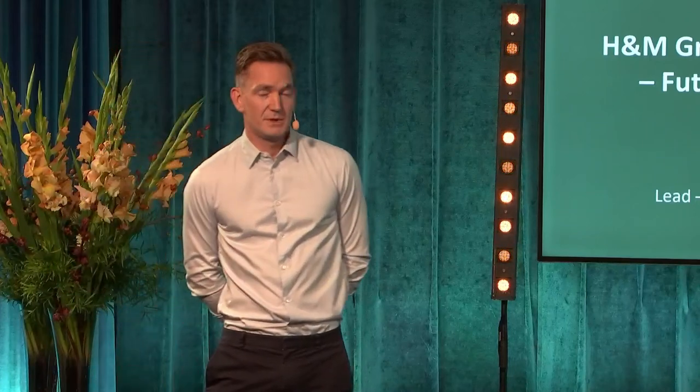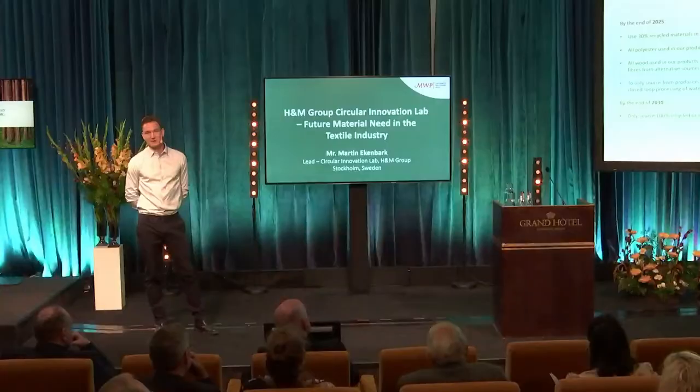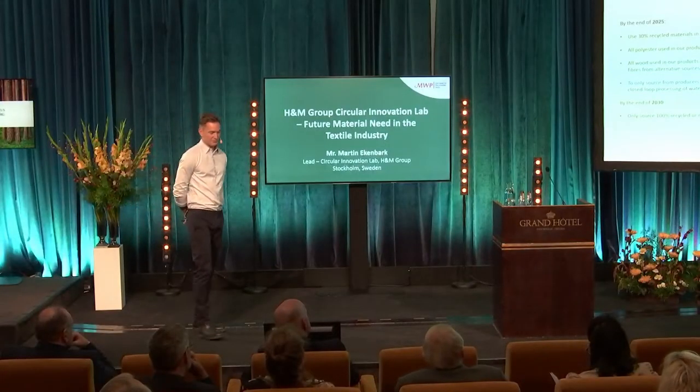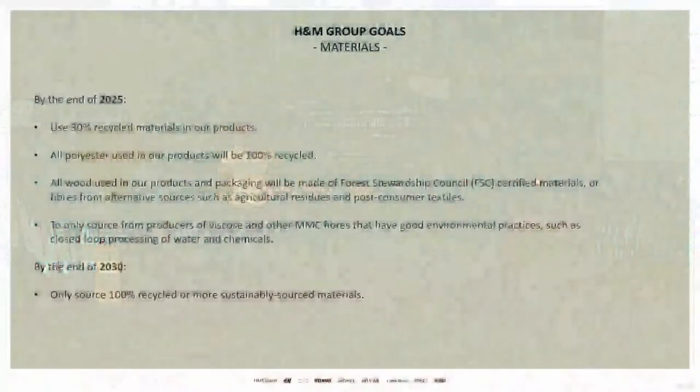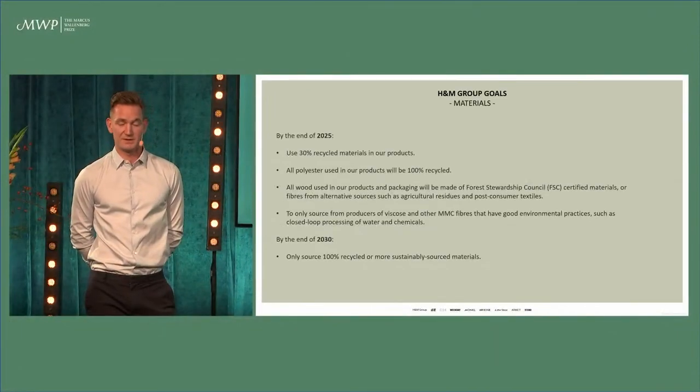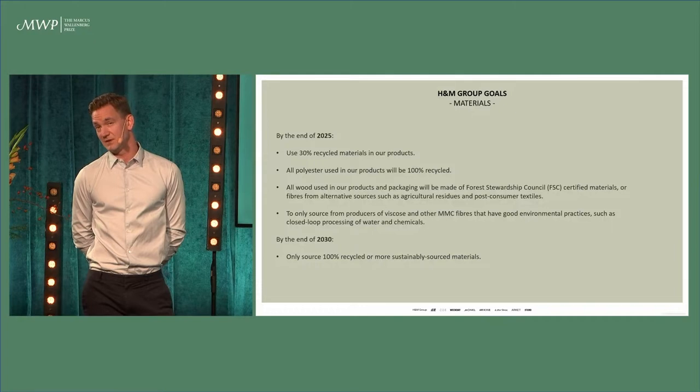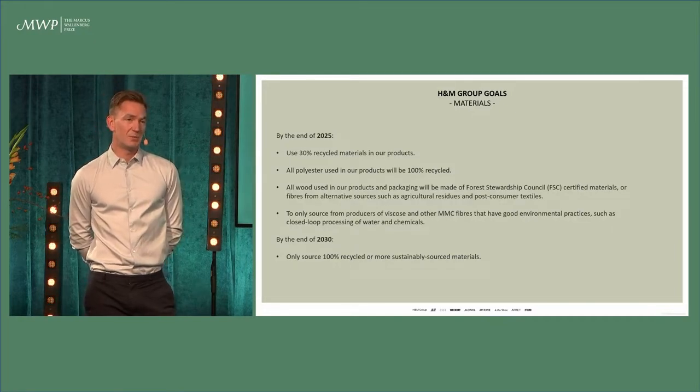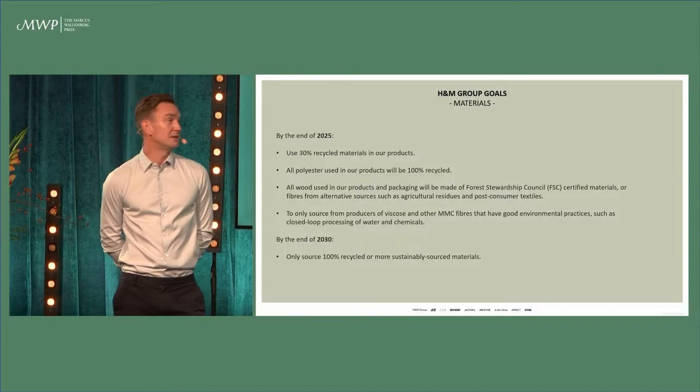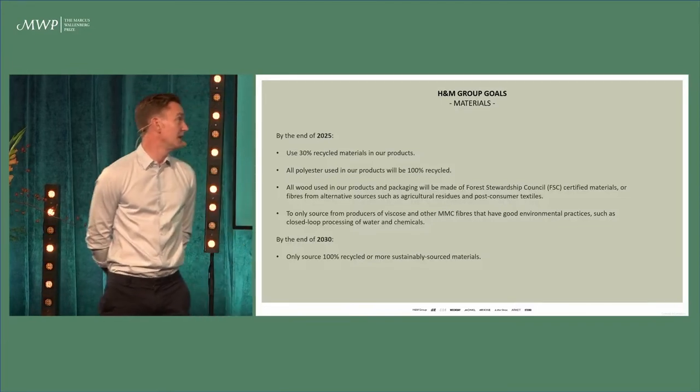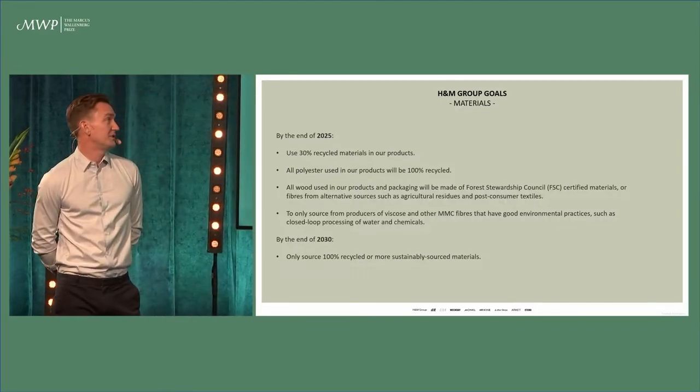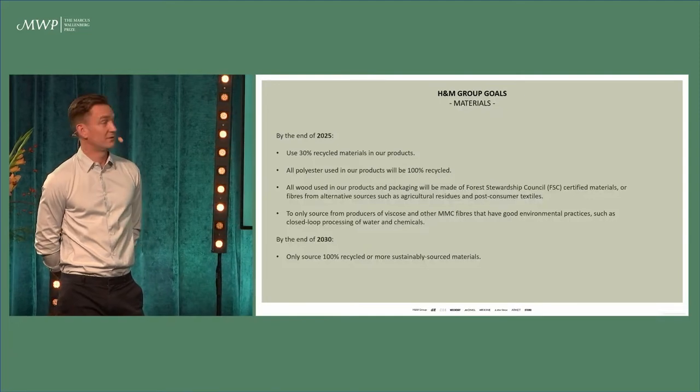I've collected a few of the goals. We have quite a lot of goals in the H&M Group, but these are most relevant for this topic. By 2025 we will use 30% recycled materials in our products. In 2021 we reached 17.8%, but we are still struggling with increasing that. I'm positive we will reach 30% by 2025.